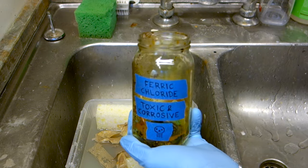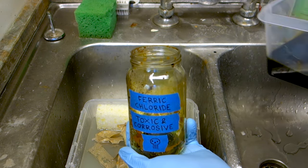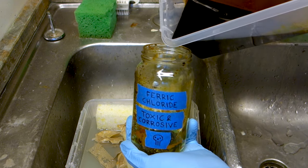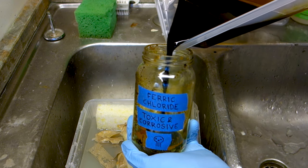The old ferric chloride can be reused, even though it has now lost some strength. Pour it back into your old container and keep it in a cool and dry place until you want to use it next.